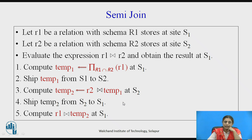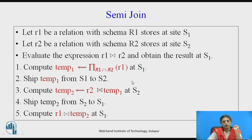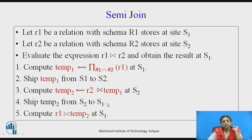R1 is the relation with schema R1 at site S1, and R2 is the relation stored at site S2. We want to evaluate R1 join R2 and obtain the result at S1. Step 1: find the common attributes required for the join of R1 and R2, project only those attributes from R1, and store in temp1. Step 2: ship temp1 from S1 to S2. Step 3: at S2, join temp1 with the entire relation R2 and store the result in temp2. Step 4: ship temp2 from S2 back to S1, then perform the join of R1 and temp2 at site S1.